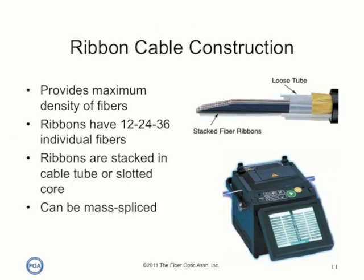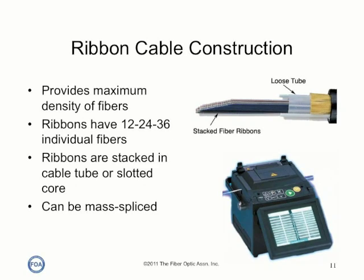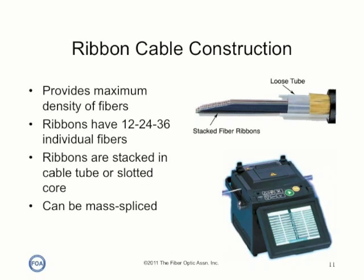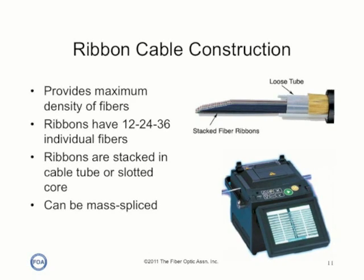Ribbon cable allows the maximum number of fibers in the smallest cable. Ribbons have 12, 24, or 36 individual fibers, and these ribbons are stacked in loose tubes or slotted cores. Ribbon cables have been made with over 2,000 fibers. This type of cable offers the maximum density of fibers, but the cables can be hard to work with — they require special tools to separate and strip the fibers and ribbon splicers that splice 12 fiber ribbons at once.